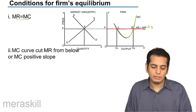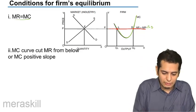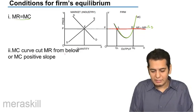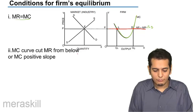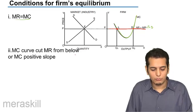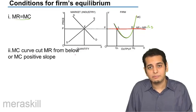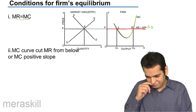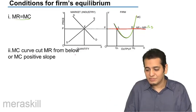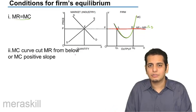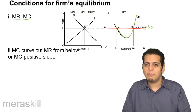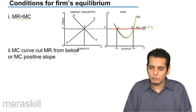What is the second order condition? The MC curve should cut the MR curve from below, or the MC curve should have a positive slope at that point. The second order condition is the MC curve should cut the MR curve from below.